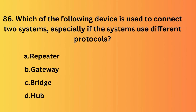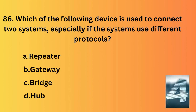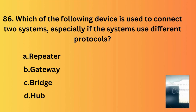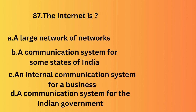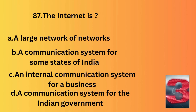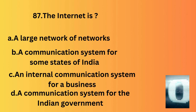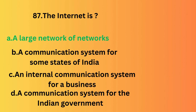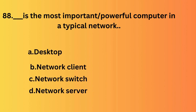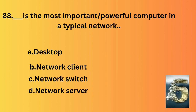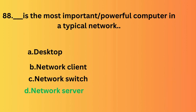Which of the following devices is used to connect two systems, especially if they use different protocols? The answer is gateway. The internet is — the answer is a large network of networks. The most important or powerful computer in a typical network — the answer is network server.